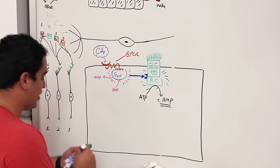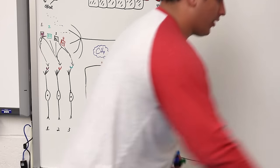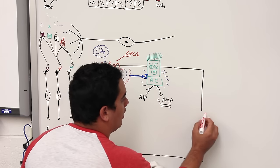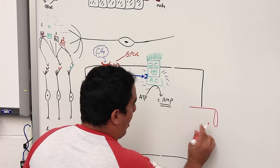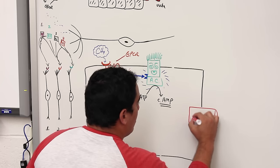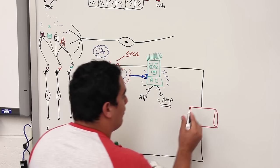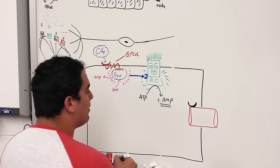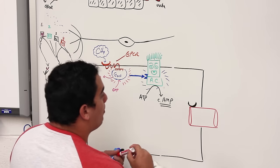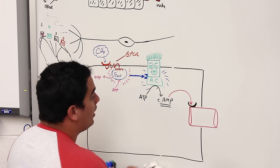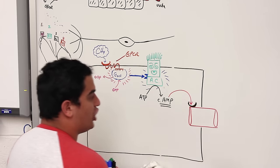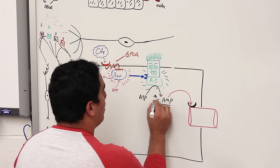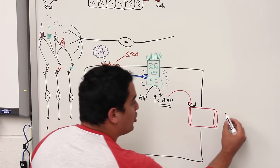When adenylate cyclase is activated, it converts ATP into cyclic AMP. There are special channels on the membrane — cyclic nucleotide-gated channels. Cyclic AMP has a specific binding site on these channels. When cyclic AMP levels rise, it binds onto this channel and the channel opens. When this channel opens, two cations flow in: sodium and calcium.